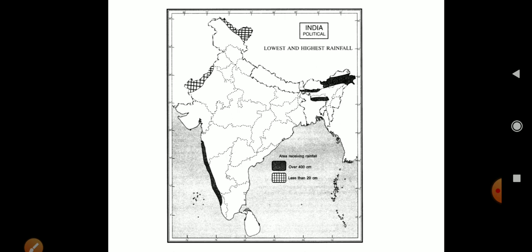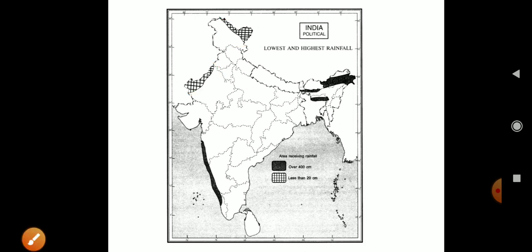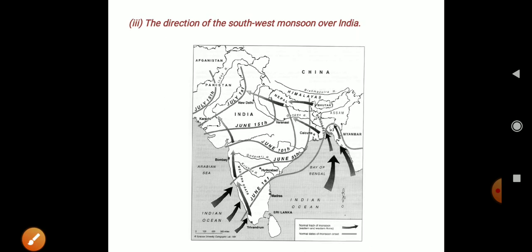The Rajasthan desert areas and Jammu and Kashmir receive less rainfall. Number three — the direction of the southwest monsoon over India: the southwest monsoon direction.